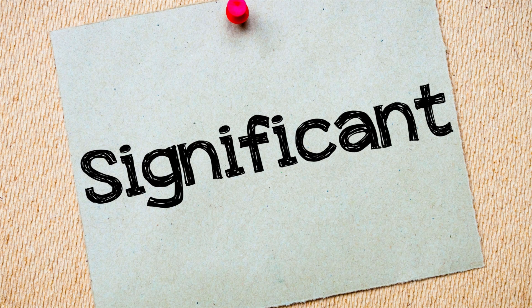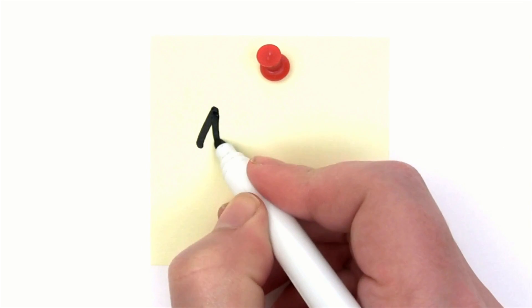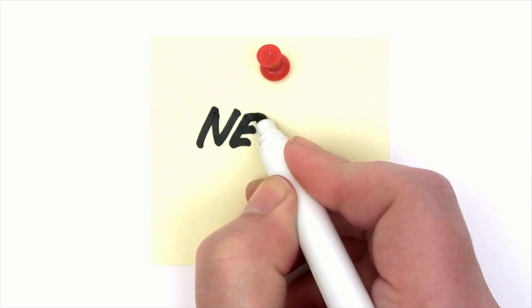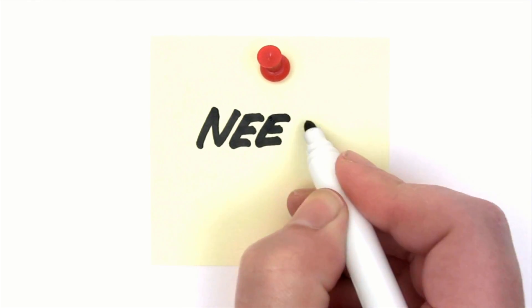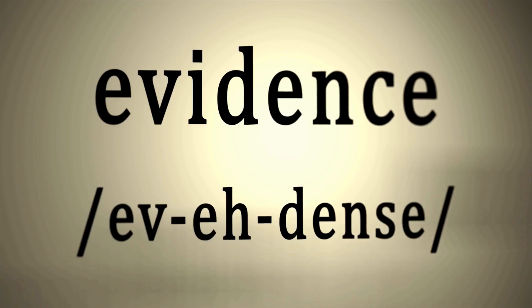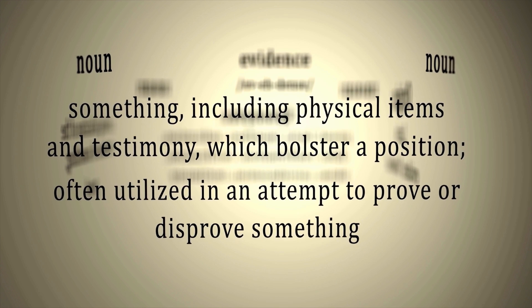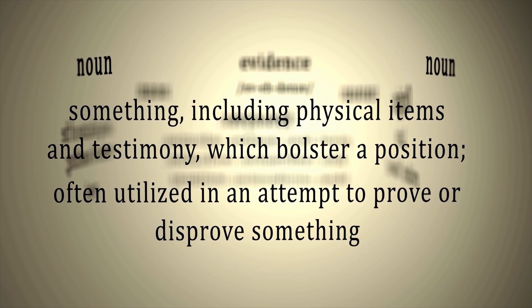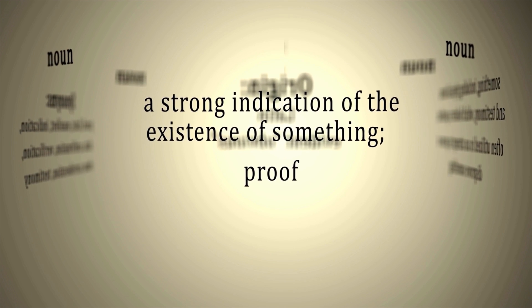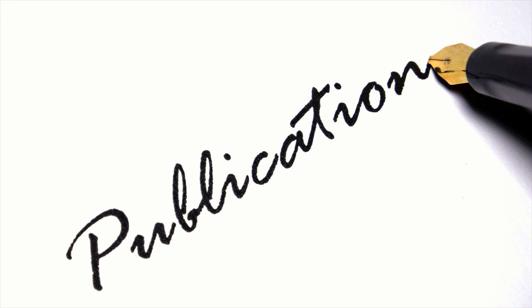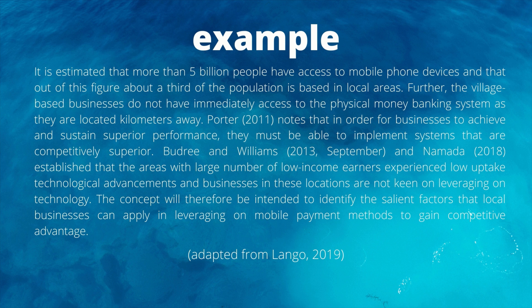Second, explain the significance of your research. Elaborate on why there is a need for the study. To do this, cite concrete pieces of evidence that will prove the importance of the study. This is done by presenting scholarly publications that will prove your point regarding the significance of the study. This is an example for significance of the study, adapted from LANGO 2019.